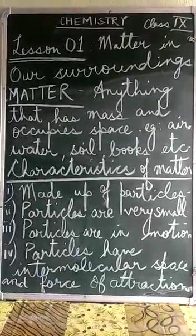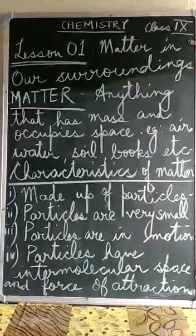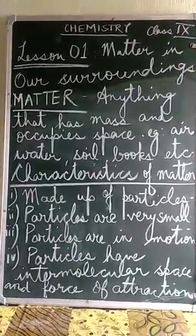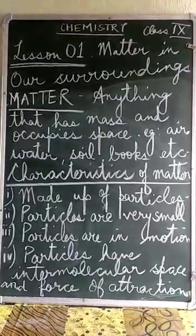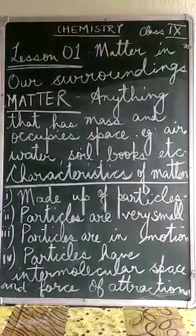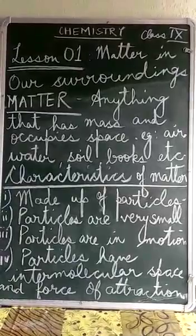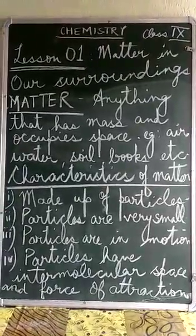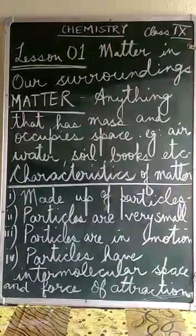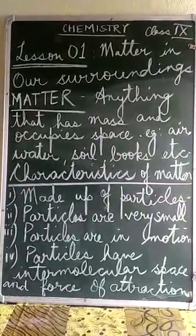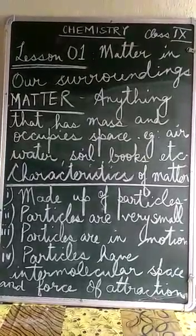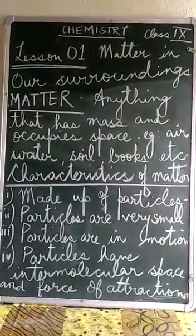The particles have intermolecular space and also have a force of attraction between them. When we consider time, forms of energy, emotions, and sensations — these are not matter. On the basis of the kinetic energy they possess, the space between the particles, and the force of attraction between the particles, there are different states or forms of matter. The three common states are solid, liquid, and gas. Plasma and Bose-Einstein condensate (BEC) are two additional forms of matter which are only possible in a laboratory.